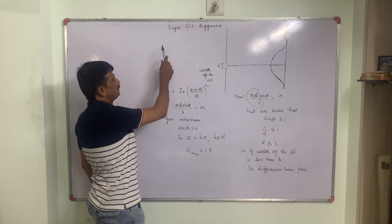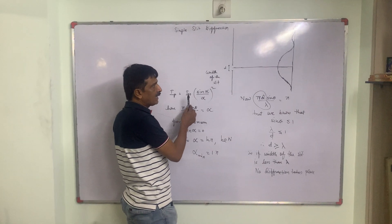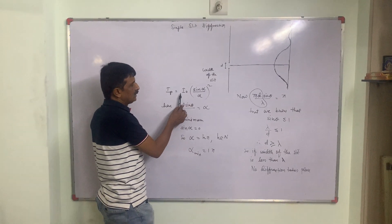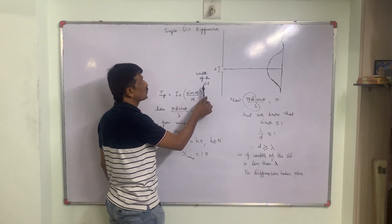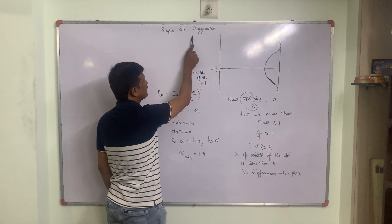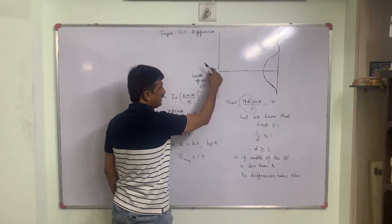We have obtained intensity at some point P at an angle theta, given by I_P equal to I_0 sin alpha by alpha whole square. This is for single slit diffraction, and this slit is having width d.